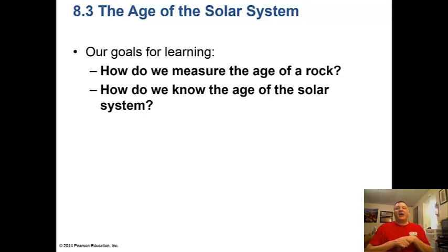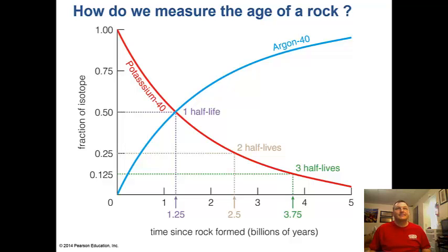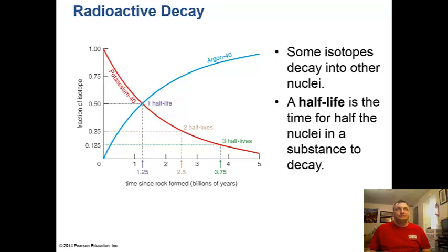Now let's take a look at how old the universe is. How do we measure the age of a rock and how do we know the age of the solar system? We believe it to be 4.6 billion years old. How do we know this? We can look at half-lives of radioactive elements that tell us how long something's been around and how old it is. This is called radioactive decay.